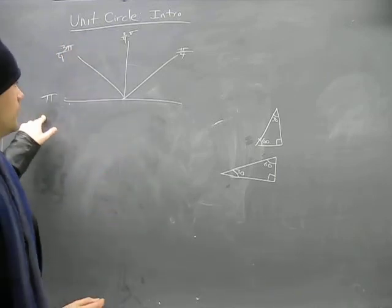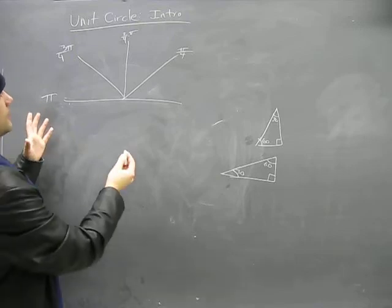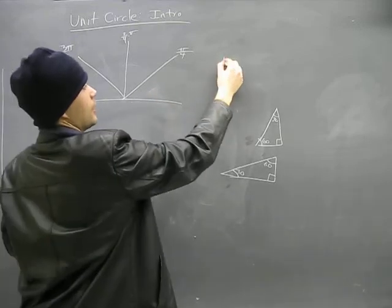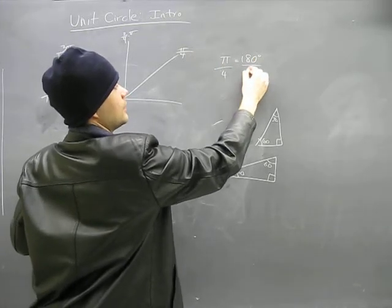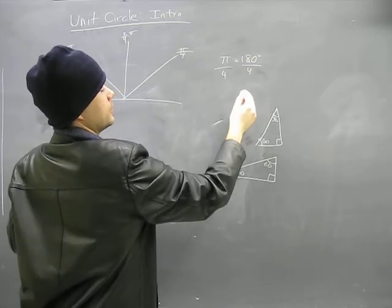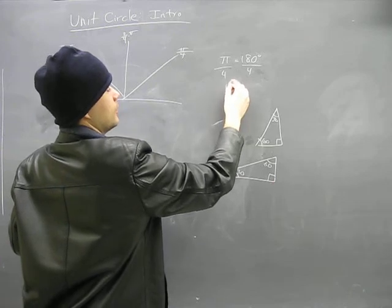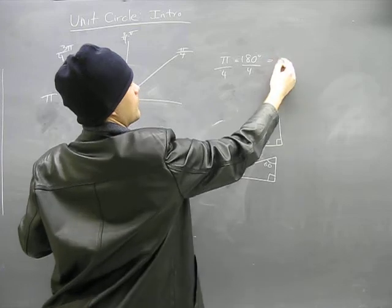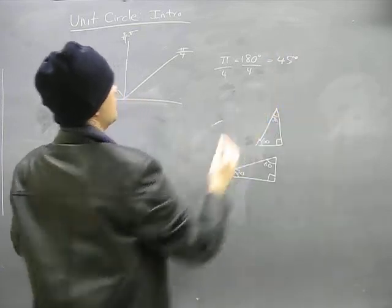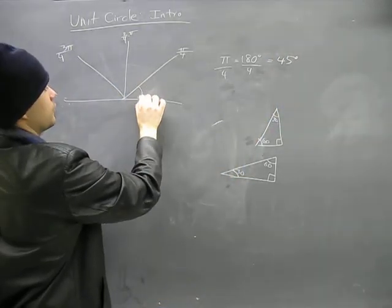And this would be 4 pi over 4 here. Then what we have is, we know that if pi is 180 degrees, we know that pi over 4 is 180 degrees over 4, which equals 90 degrees. 90 degrees, what am I talking about? 45 degrees.